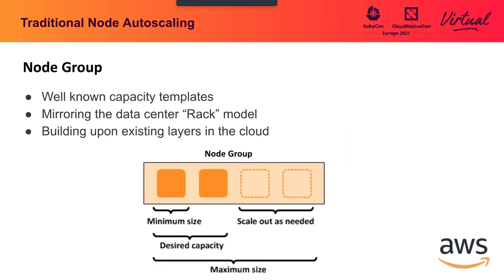Let's understand what a node group is. A node group is a logical grouping of nodes which can be auto-scaled and managed together. Cluster admins can create multiple node groups, specifying instance type options and other configurations, and also set a minimum and maximum node count. Node groups are not auto-self-filling — that is done by an auto-scaler by setting the desired maximum.